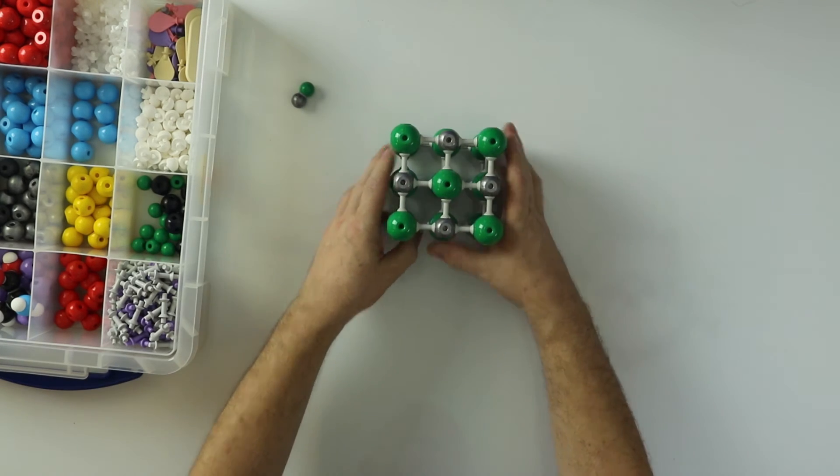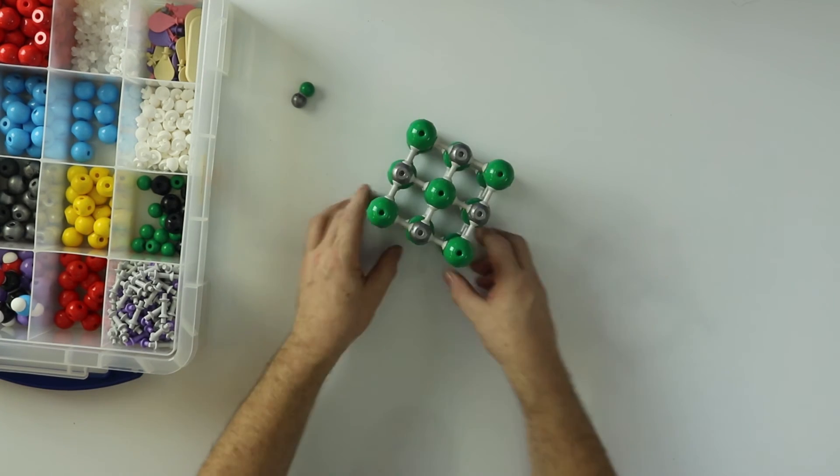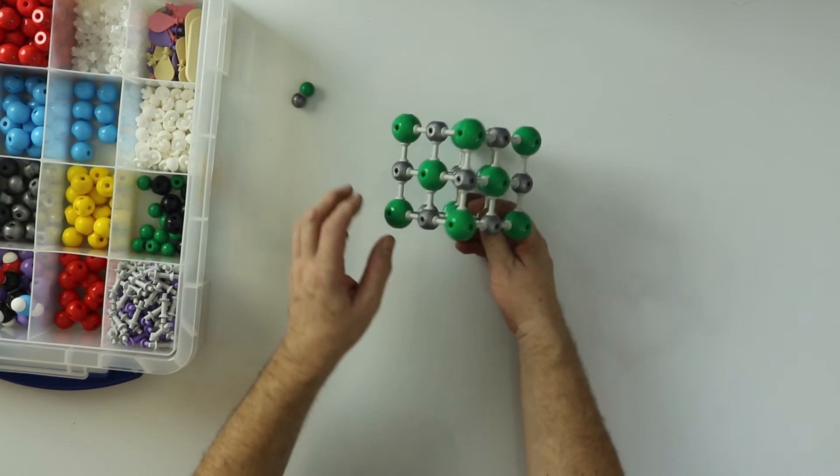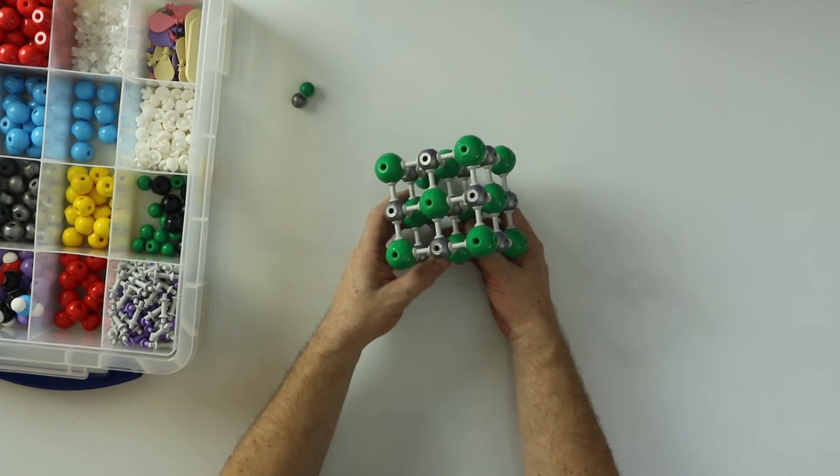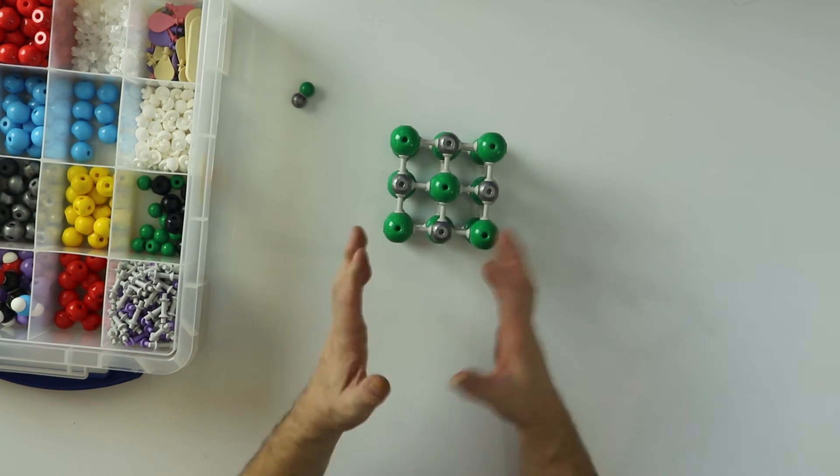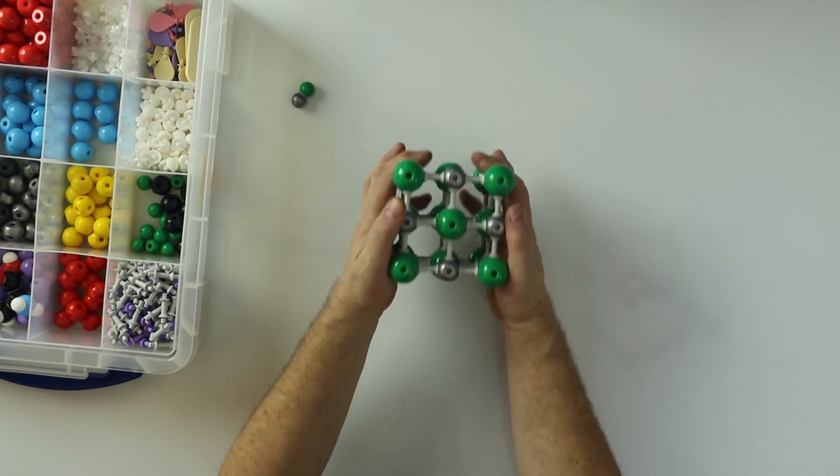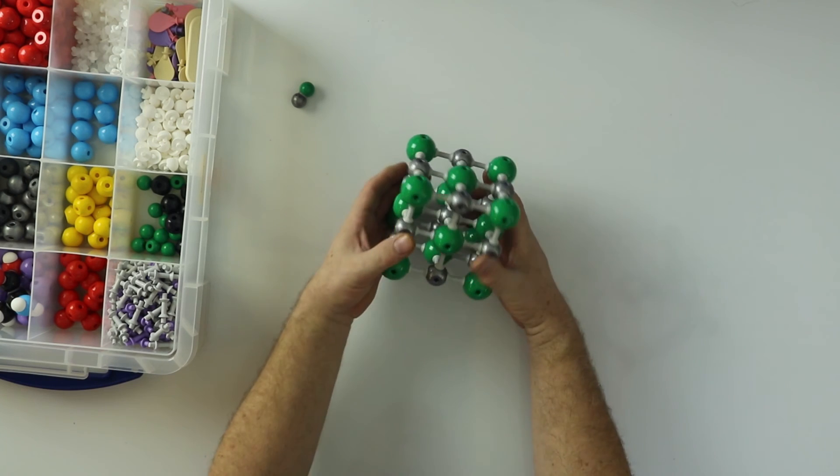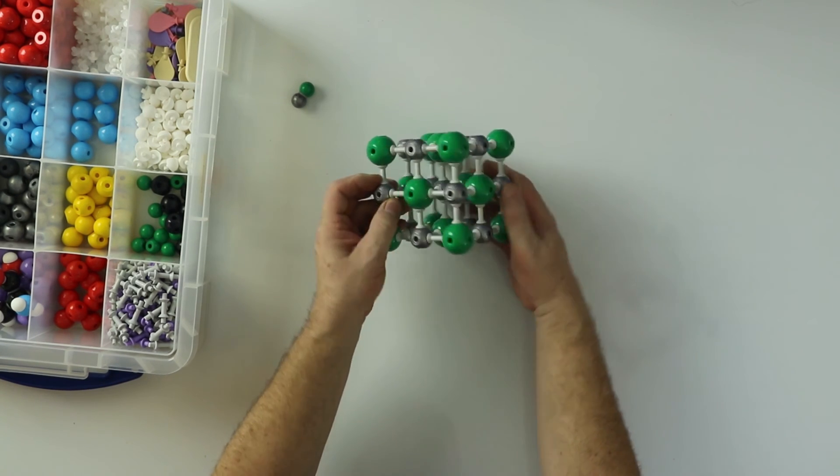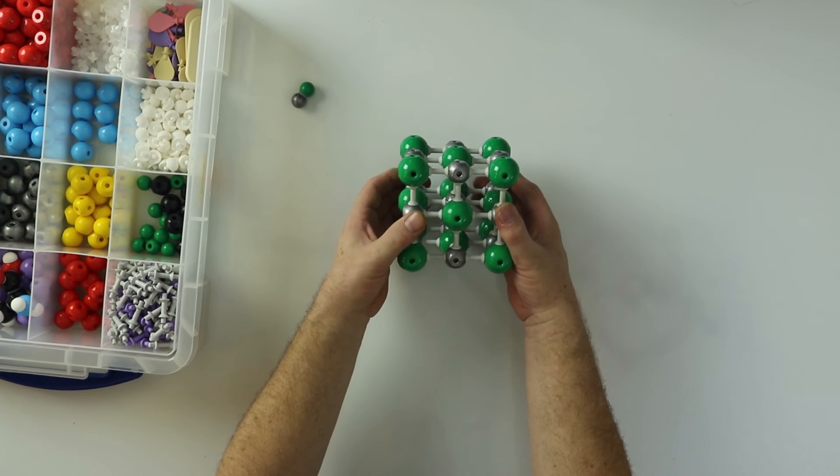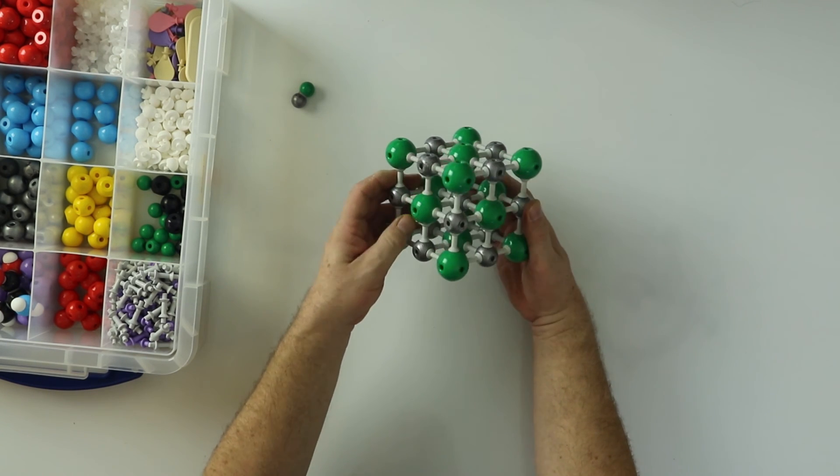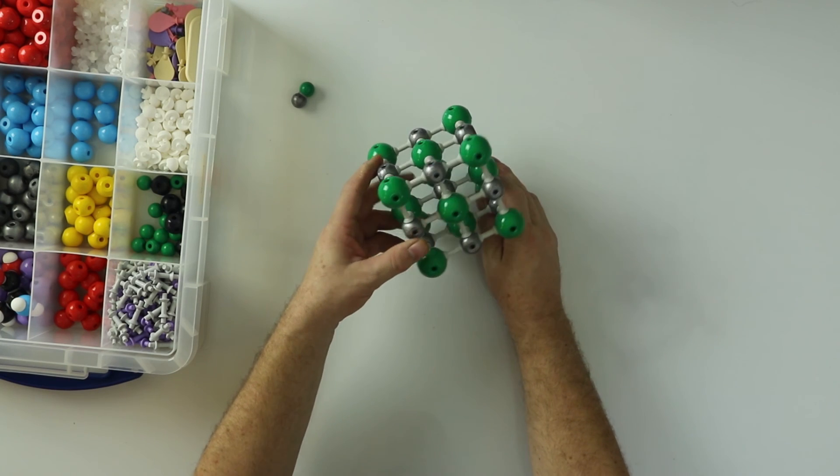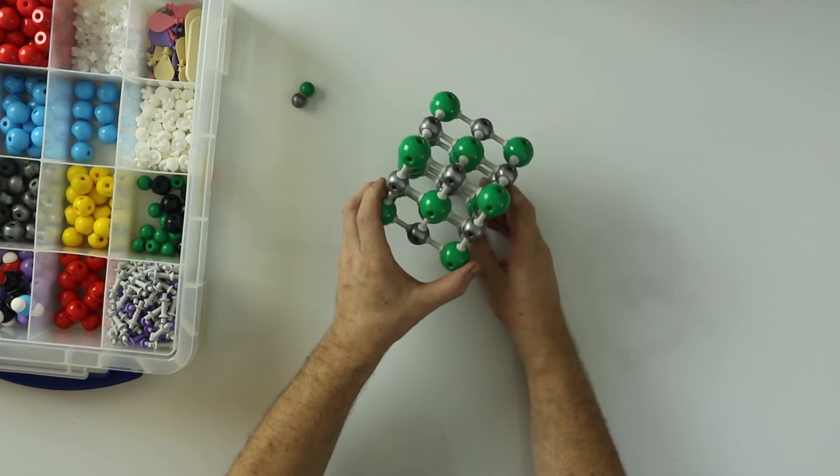So six chloride ions, six sodium ions, makes NaCl. Now, with these very strong bonds, this is very stable. It has a very high melting point and a very high boiling point, and this makes for a very stable and strong molecule.